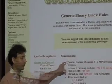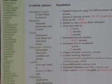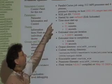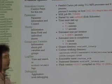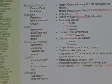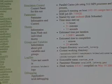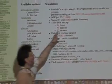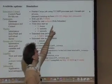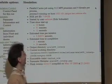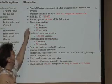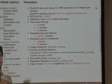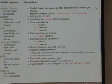On the right side are details about the simulation. This is a parallel Cactus job running on 500 MPI processes with 4 threads per MPI process, totaling 2,048 cores of Ranger. It was started by myself about 15 hours ago, and each iteration of the simulation takes about 3 seconds.